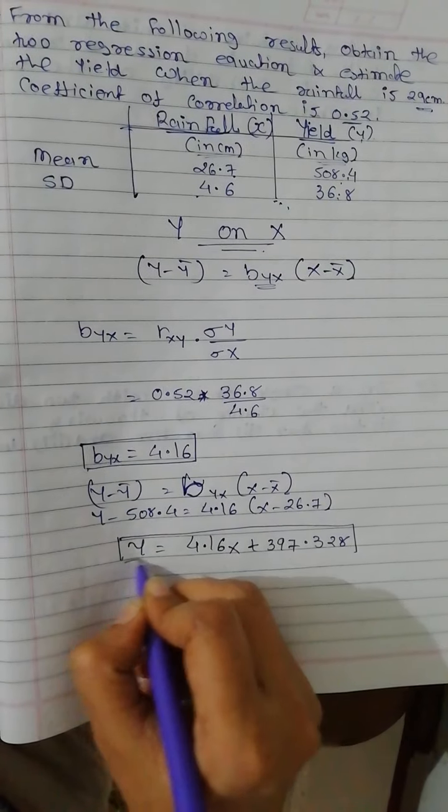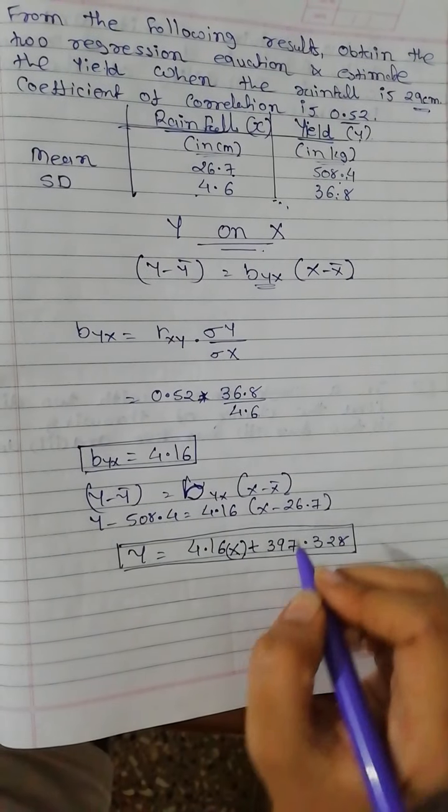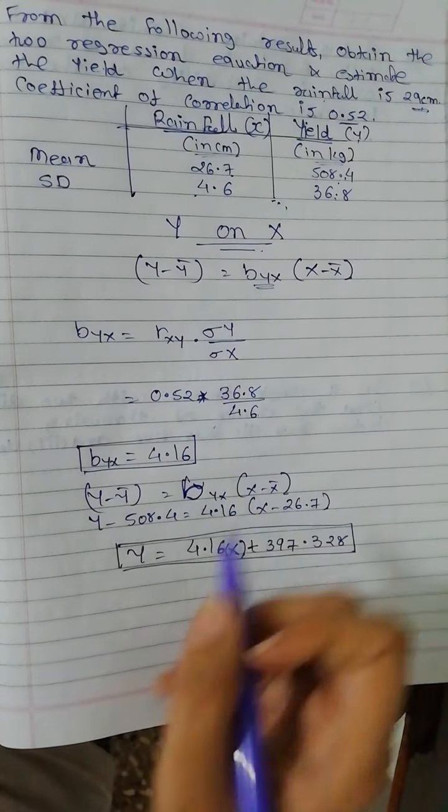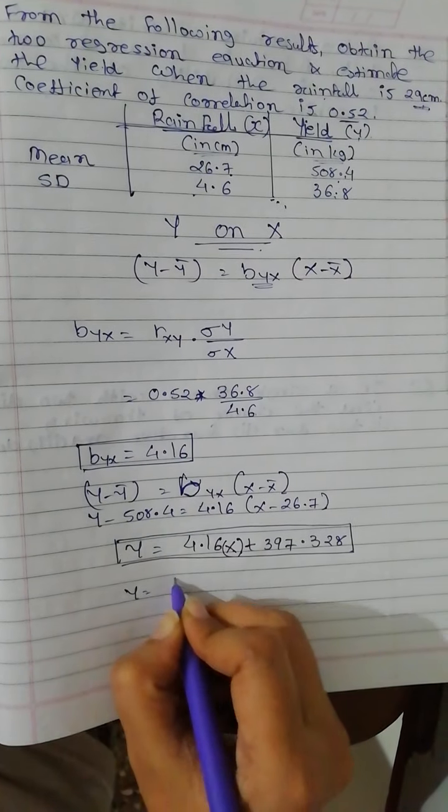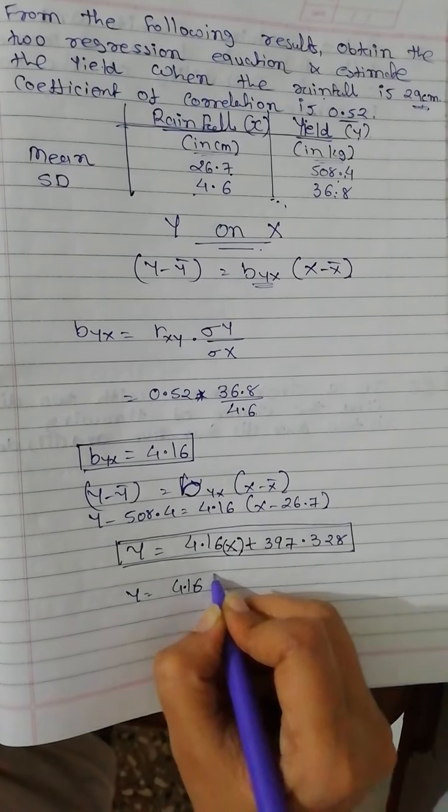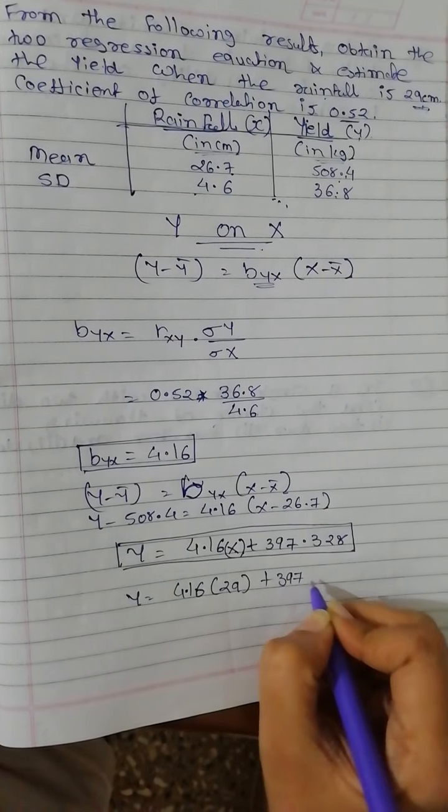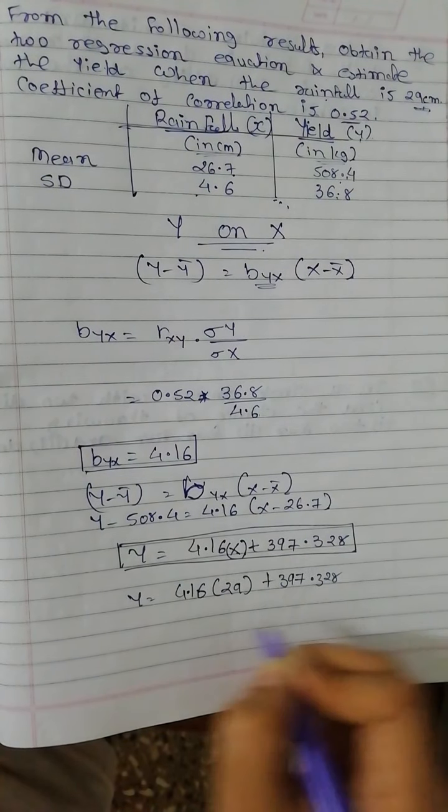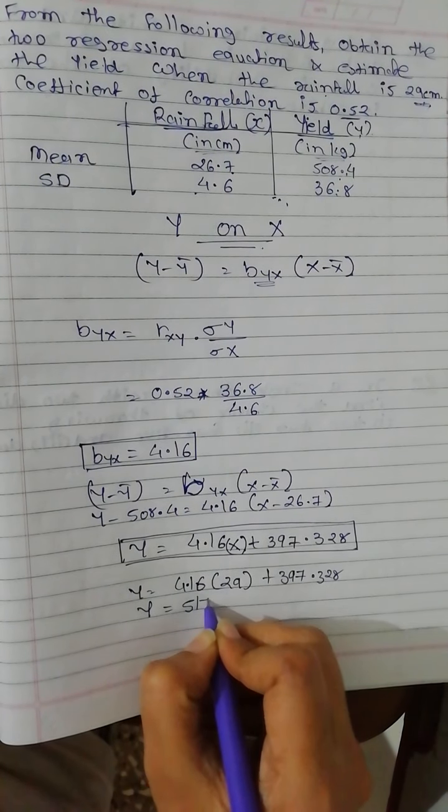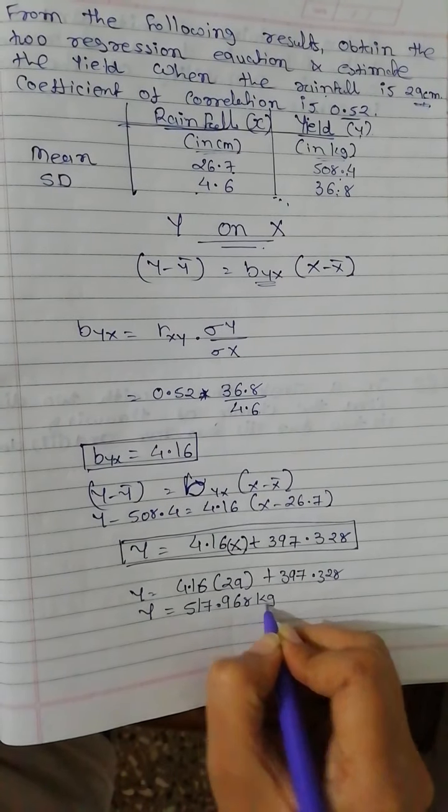Now we will put x value in this equation. The x value, the rainfall, is given 29 centimeter. So I will put 4.16 times 29 plus 397.328. So y is 517.968 kg.